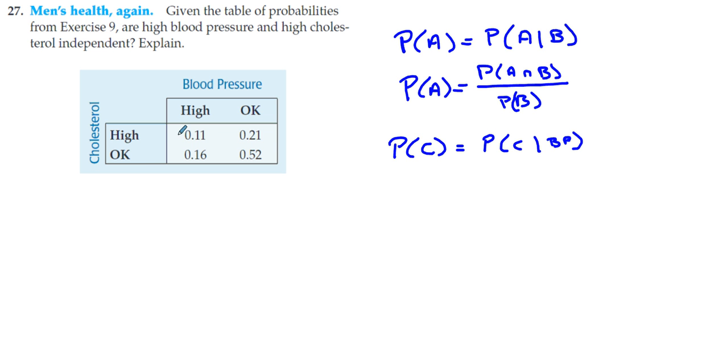So the probability of someone with high cholesterol is 0.11 plus 0.16 is 0.32. We have a 0.32 probability of randomly selecting a male with high cholesterol.